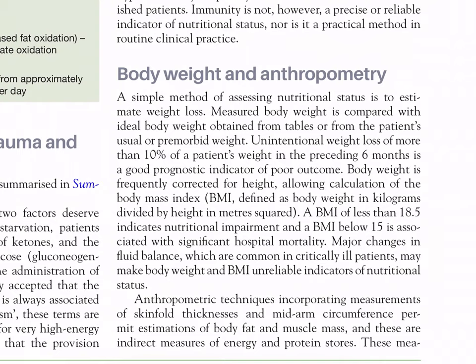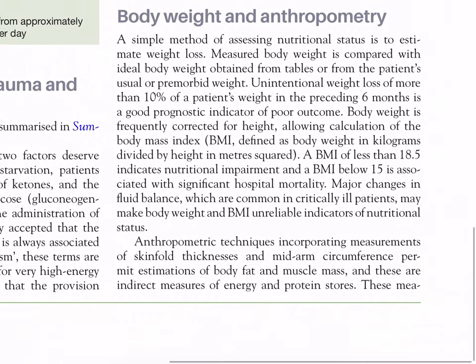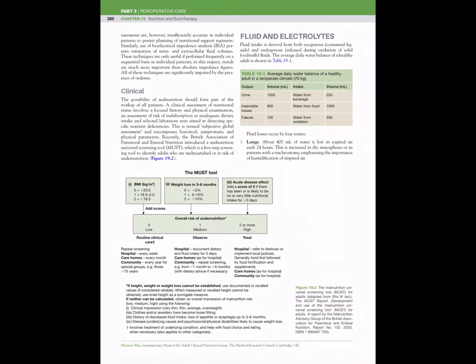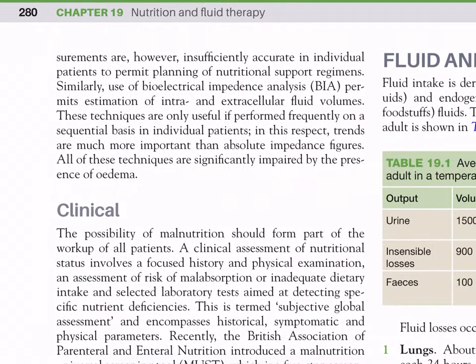Major changes in fluid balance, which are common in critically ill patients, make body weight and BMI unreliable indicators of nutritional status. Anthropometric techniques incorporating measurements of skinfold thickness and mid-arm circumference permit estimation of body fat and muscle mass as indirect measures of energy and protein stores. These measurements are insufficiently accurate in individual patients to permit planning of a nutritional support regimen. Similarly, bioelectrical impedance analysis (BIA) permits estimation of intra- and extracellular fluid volumes, but these techniques are only useful if performed sequentially; trends are more important than absolute figures, and all are significantly impaired by the presence of edema.